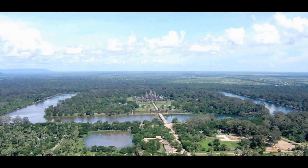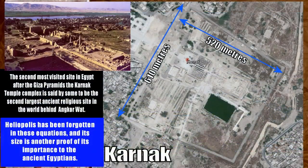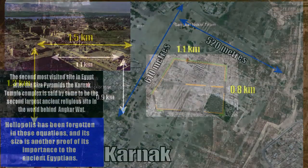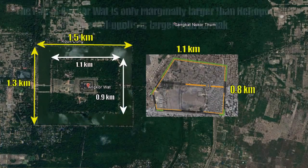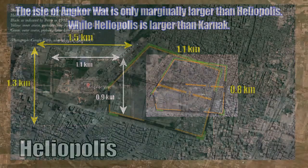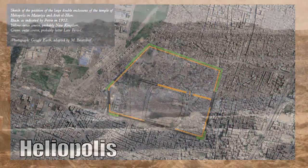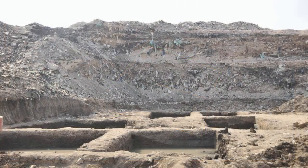Although Angkor Wat shouldn't be considered ancient on the scale of Karnak or Heliopolis, Angkor Wat is only marginally larger than Heliopolis — making Heliopolis the largest religious temple precinct in the ancient world. Though now, sadly, it remains little more than a footprint under a pile of rubbish meters deep in an otherwise unknown suburb of northern Cairo.